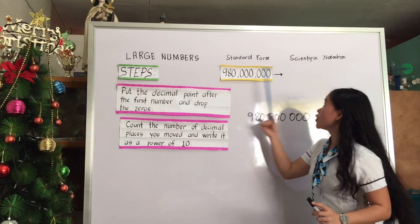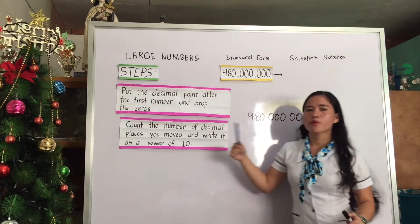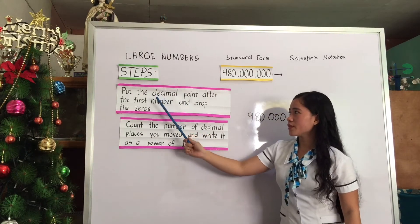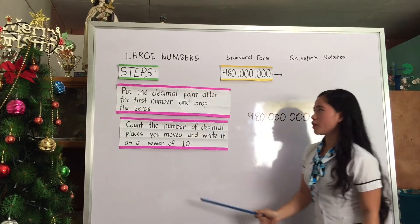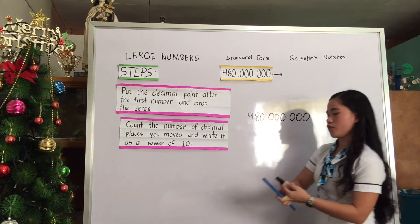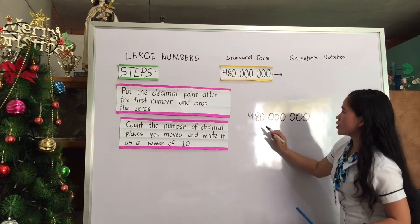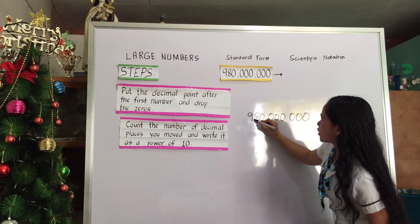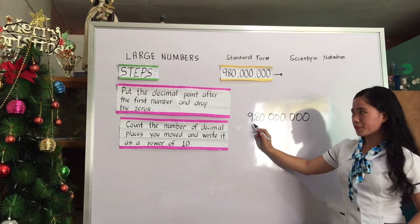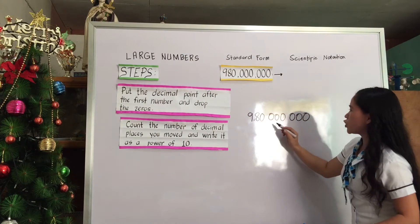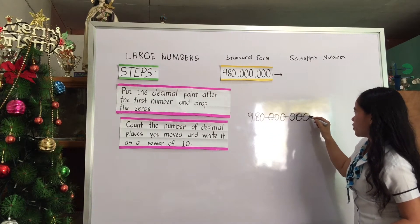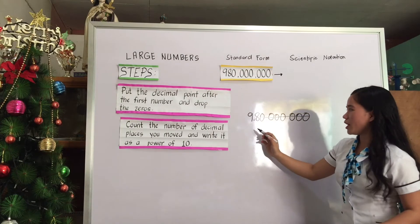In writing large numbers in scientific notation, we will follow these steps. Step one: put the decimal point after the first number and drop the zeros. So from here, we drop the zeros, and the remaining will be 9.8.